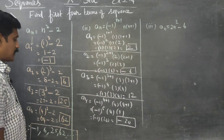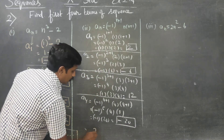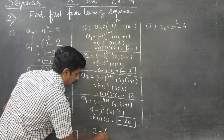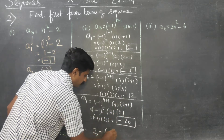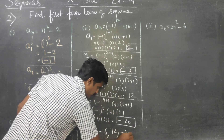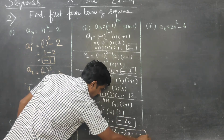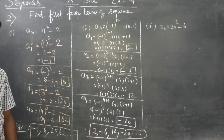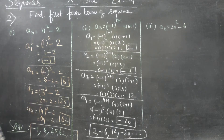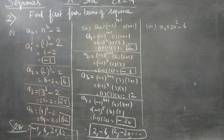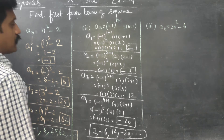These are my four terms of the sequence: 2, -6, 12, -20, ... We have just found only four terms. The last third subdivision in the second sum is aₙ = 2n² - 6.